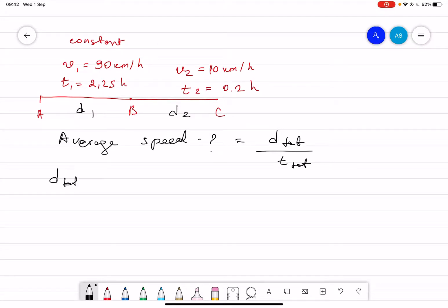Total distance can be found by d1 plus d2, correct. Now what is d1? Here d1 is basically v1, the constant speed, multiplied by the time t1, plus v2 multiplied by t2. Now if you plug the numbers, you should get the total distance.